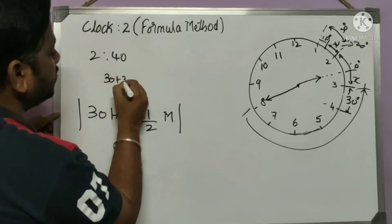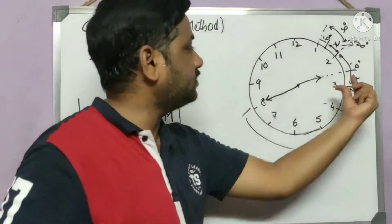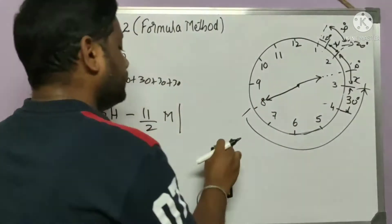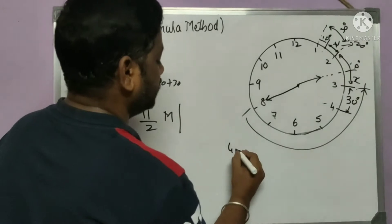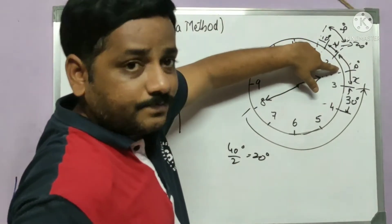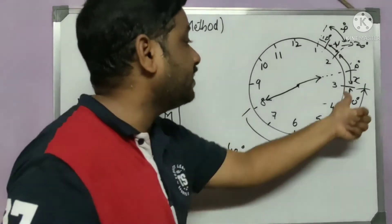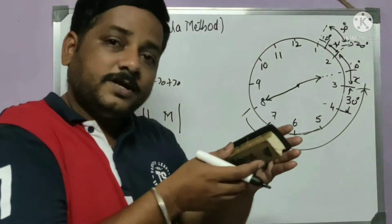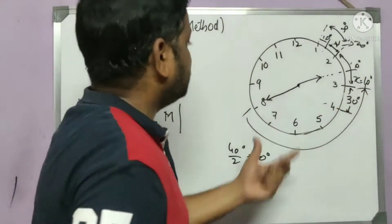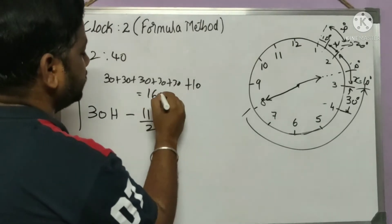To find x: the hour hand moves half a degree per minute. At 40 minutes it has moved 40/2 = 20 degrees from 2 o'clock. The remaining angle in that sector is 30 − 20 = 10 degrees, so x = 10 degrees. Therefore the total angle = 150 + 10 = 160 degrees.